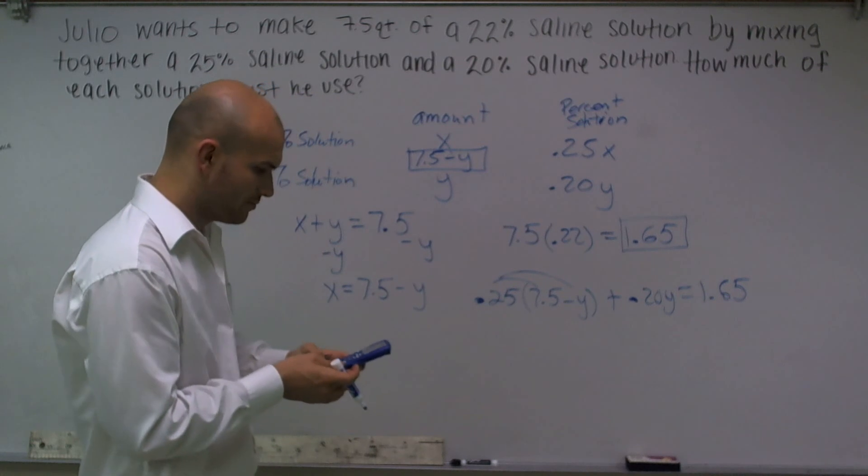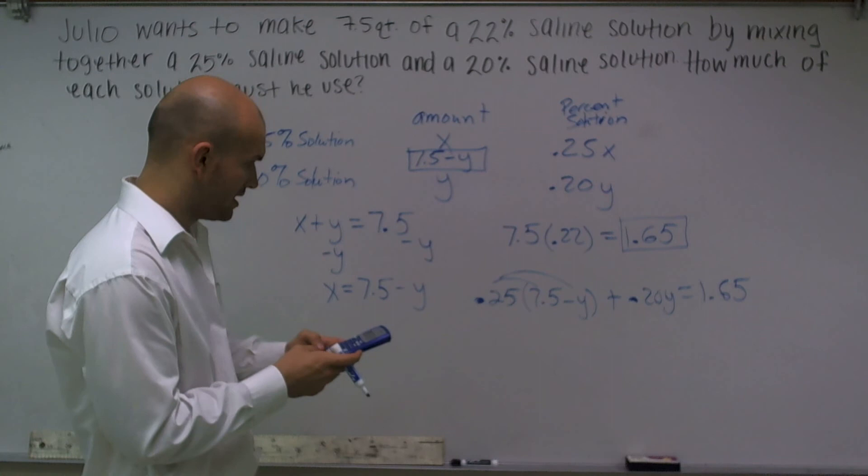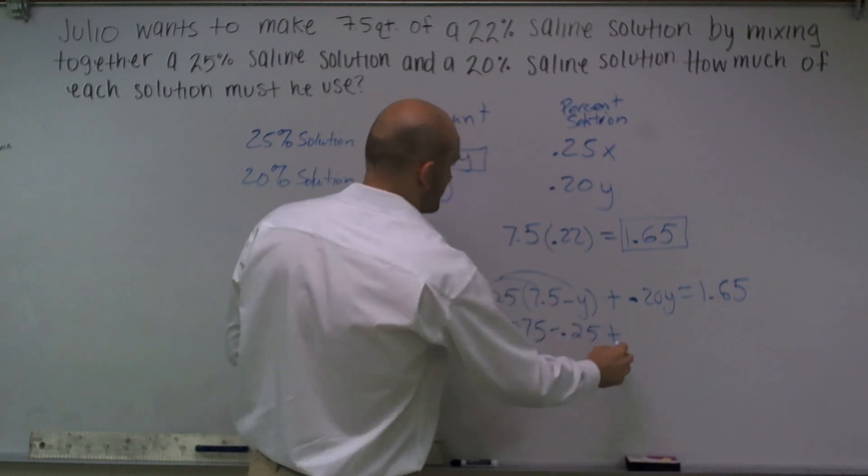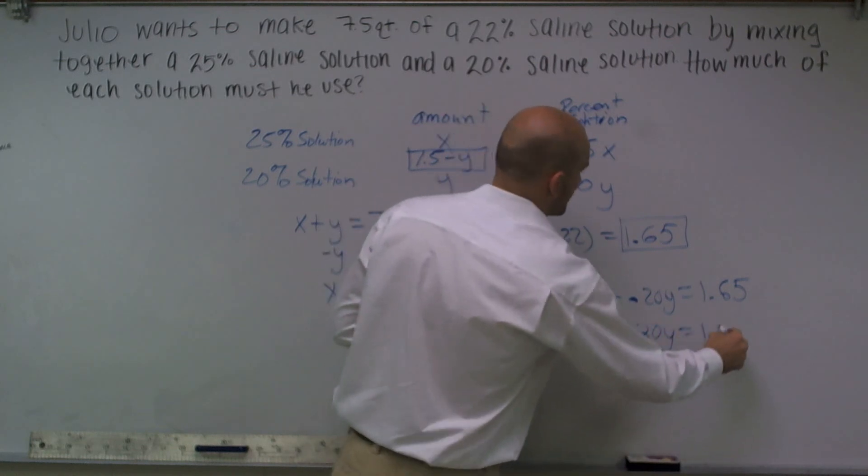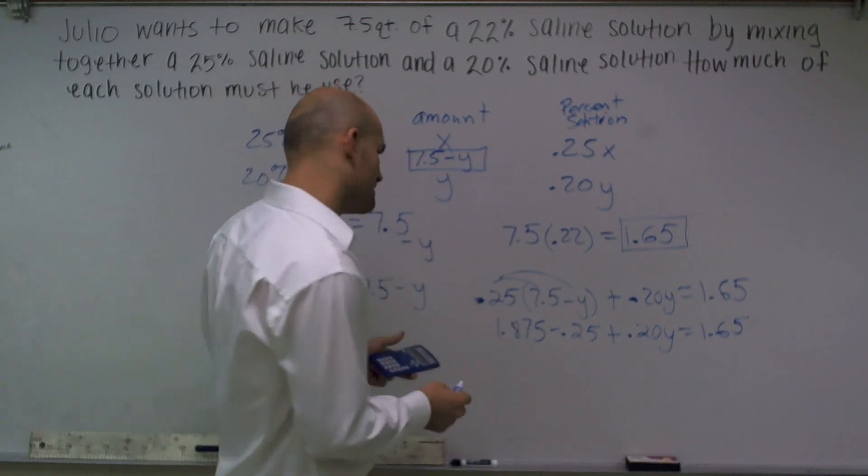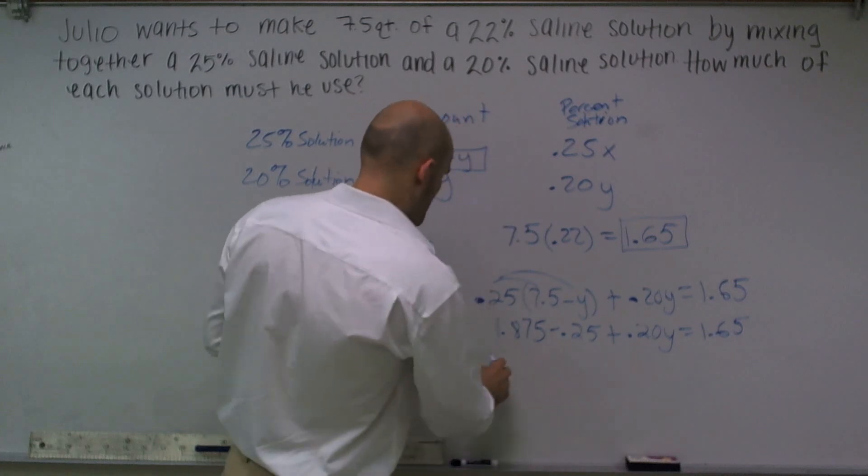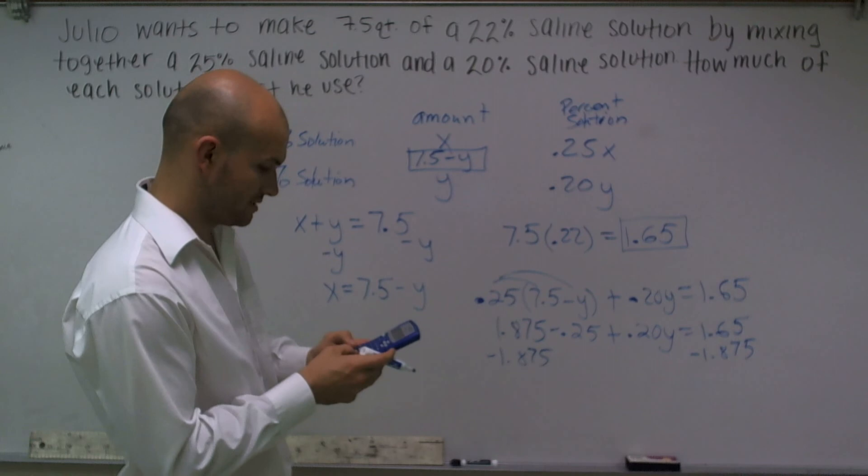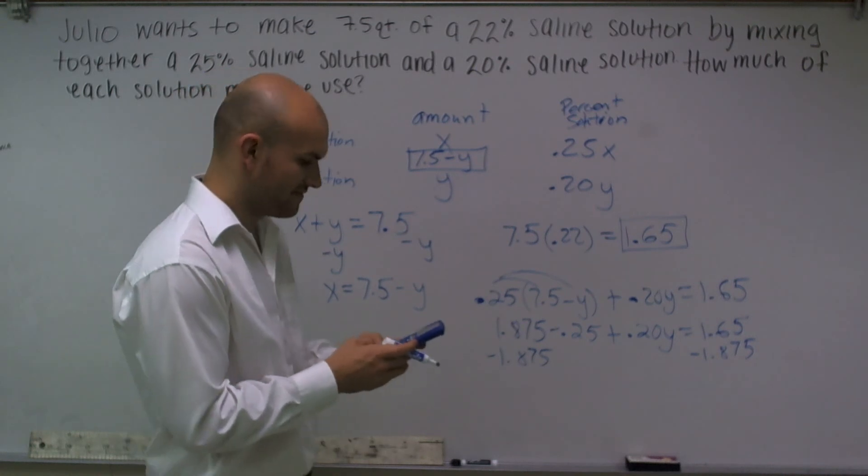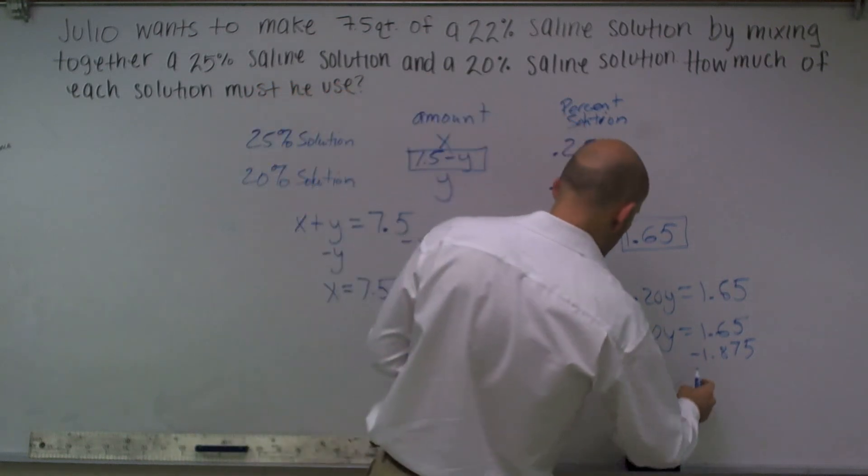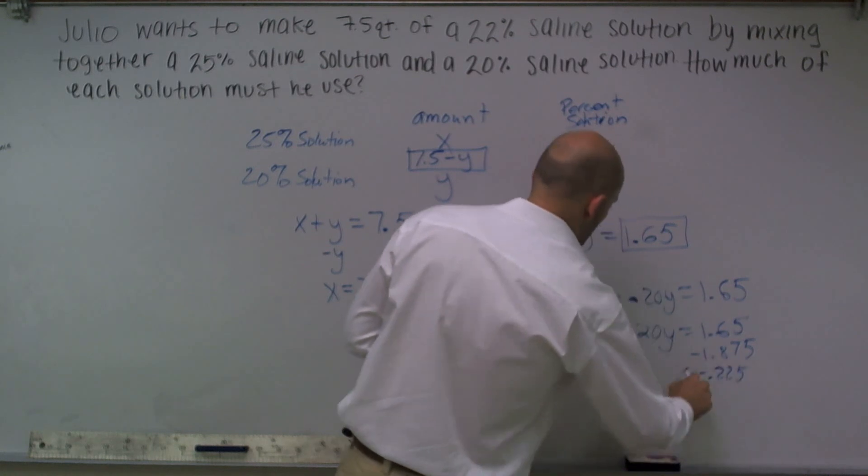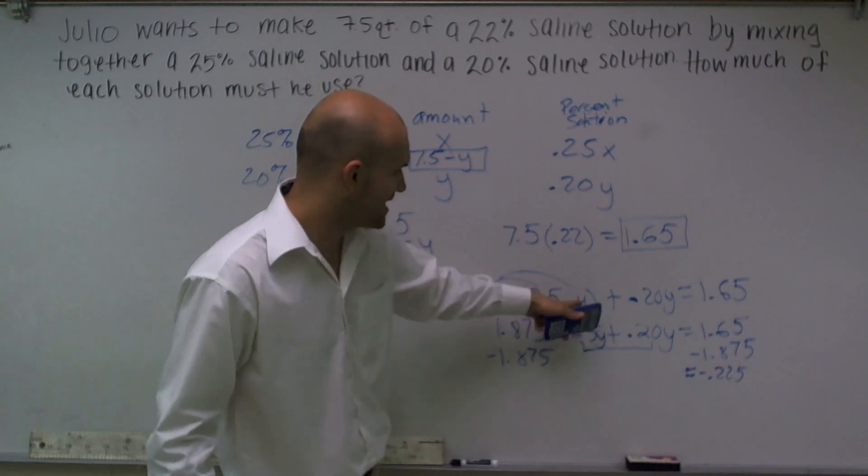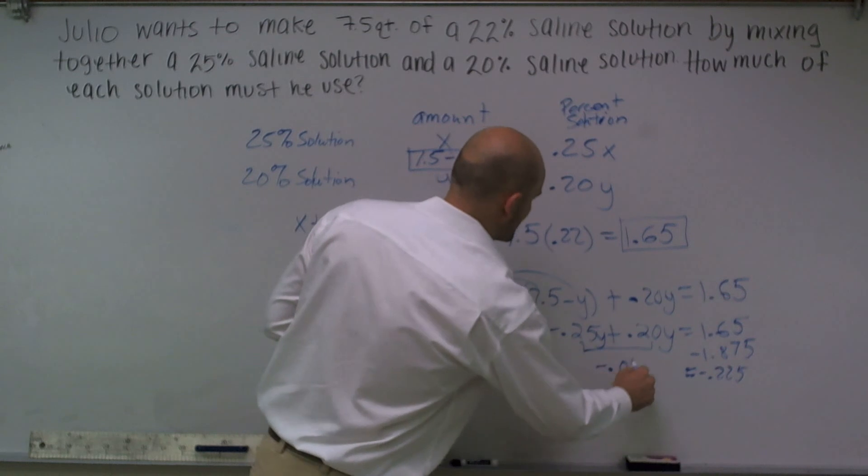Now we have to do a little math, a little algebra. I'll do my distributive property. So .25 times 7.5 equals 1.875 minus .25y plus .20y equals 1.65. Now I can combine my like terms. So that's going to provide me with a negative .05. So I'll subtract 1.875. So 1.65 minus 1.875 gives me a negative .225. When I combine these two together, .25 times negative y is a negative .25y. When I combine them, I get a negative .05y.